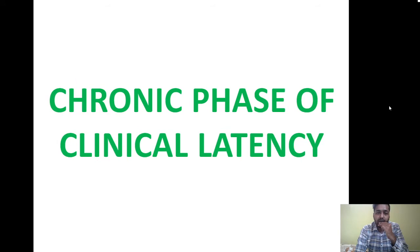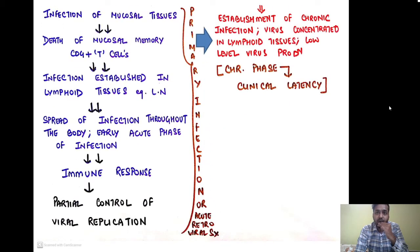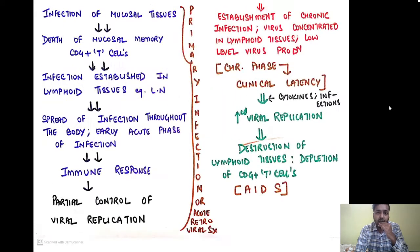The second phase is the chronic phase of clinical latency, characterized by establishment of chronic infection. The virus is concentrated in lymphoid tissue — the spleen and lymph nodes — with a low level of virus production. This is followed by acquired immunodeficiency syndrome, where in the background of raised cytokines and infections there is increased viral replication. This leads to increased destruction of lymphoid tissues with depletion of CD4+ T cells and the clinical syndrome of AIDS.